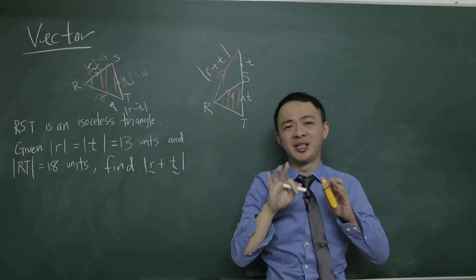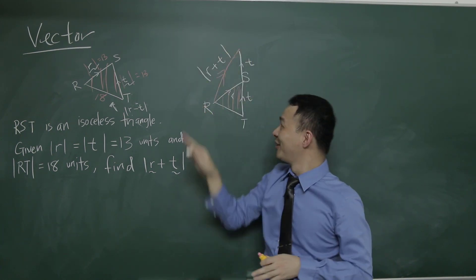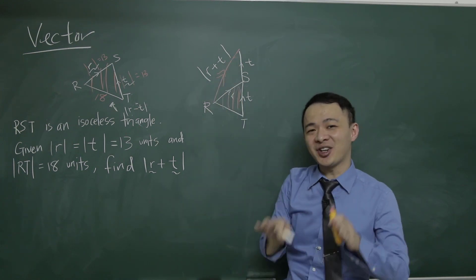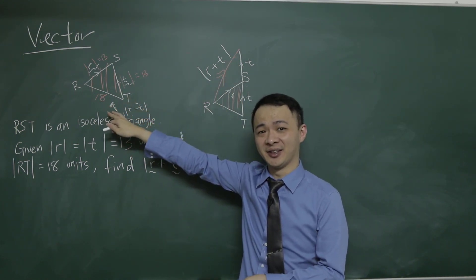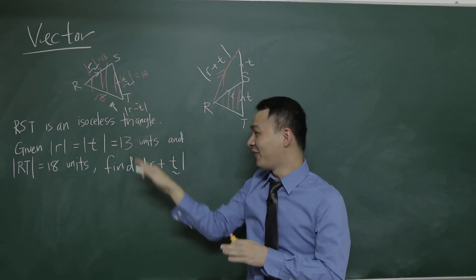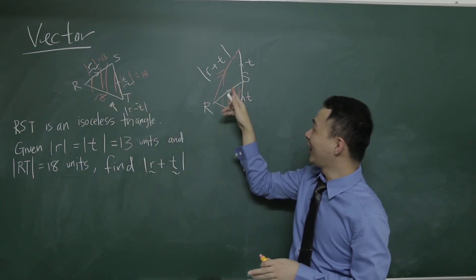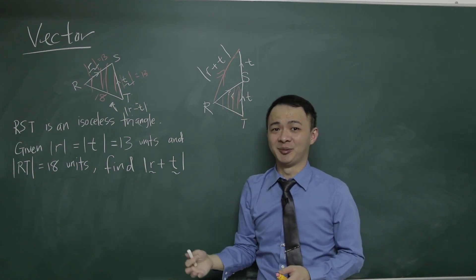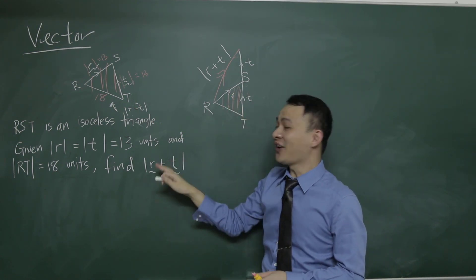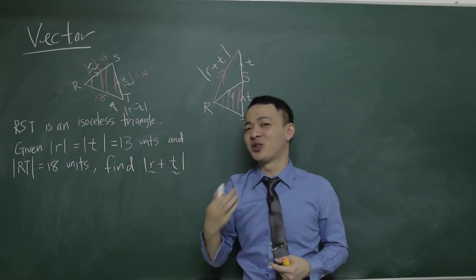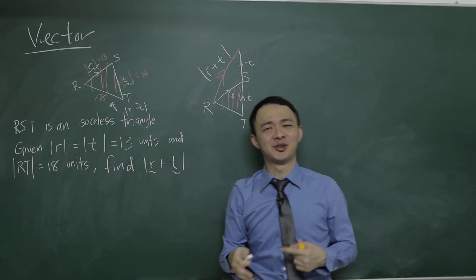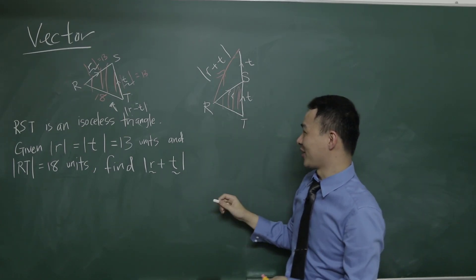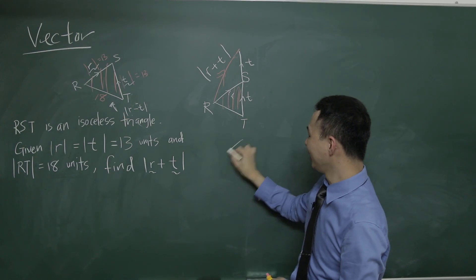The difficult part about this question is that this line — R plus T — you cannot directly see it from the triangle given. However, to get the length, you need to solve the triangle, because this vector question actually uses the solution-of-triangle formula, which is the cosine rule.